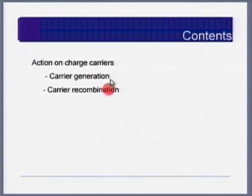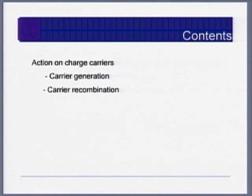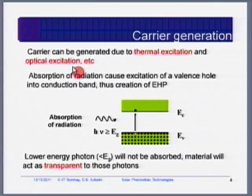Today we will look at carrier generation and carrier recombination, which is very important for the solar cell. It is not important for the diode because a diode is an encapsulated material with a capping on it — light does not go in. But here we are talking about solar cells, so we are also worried about carrier generation due to light.